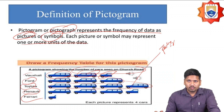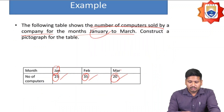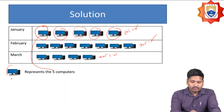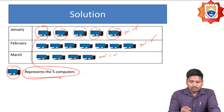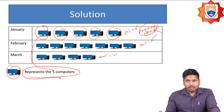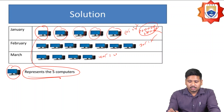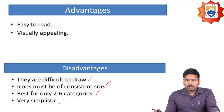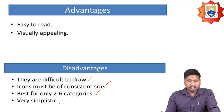Each picture or symbol is going to represent one or more units of the data. For example, for the number of computers sold in the last three months, each symbol represents five computers. So instead of representing 25 computers directly, I use 5 symbols each representing 5. Advantages of pictogram: easy to read and visually appealing. Disadvantages: difficult to draw, icons must be of consistent size, best only for certain categories, and should be very simplistic.